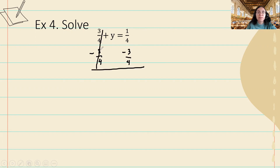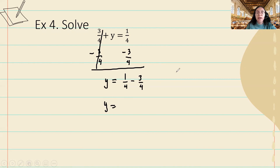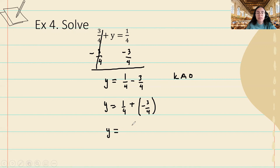These will cancel. I can bring down my y, bring down my equal sign, and perform the operation: one-fourth minus three-fourths. Remember, subtraction order does matter, so I'm going to use the keep-add-opposite rule. I keep one-fourth the same, I add instead of subtract, and I add the opposite of three-fourths.